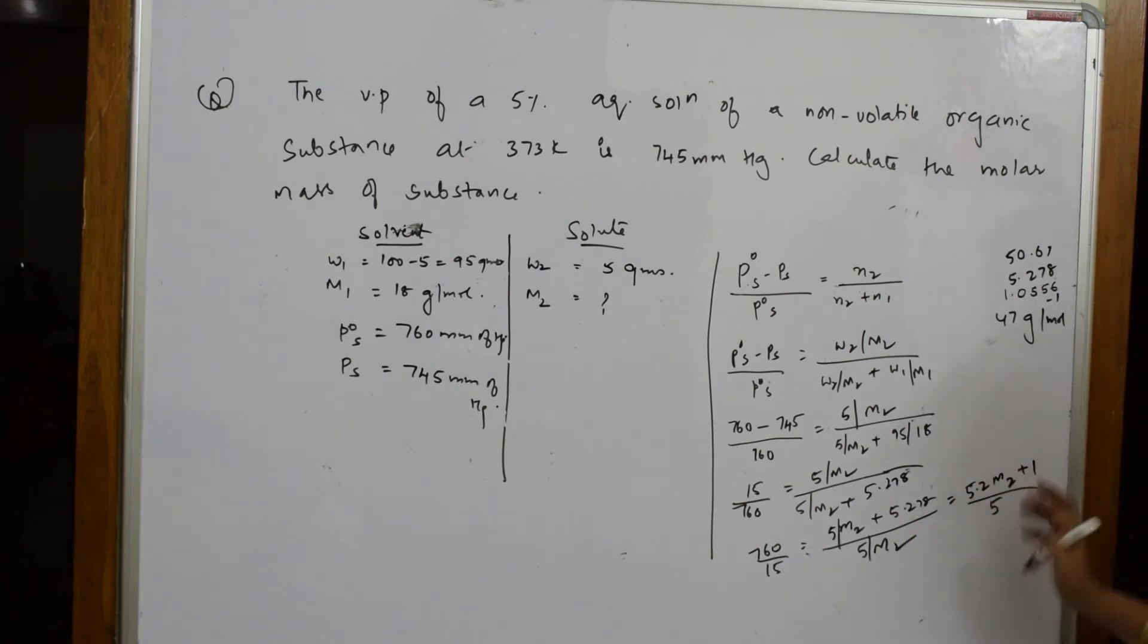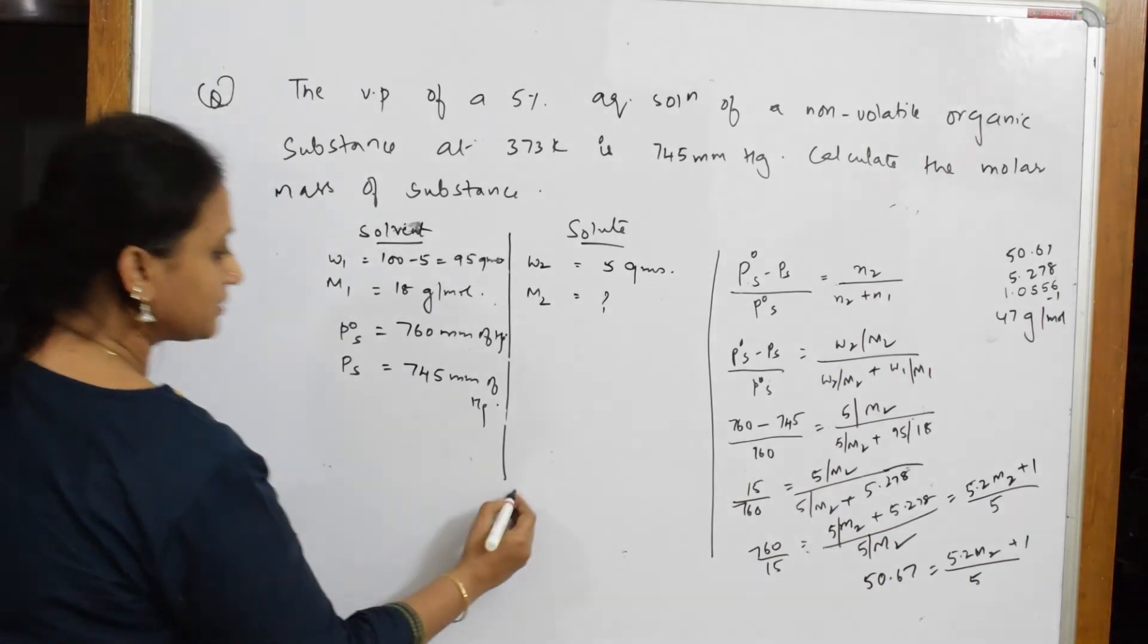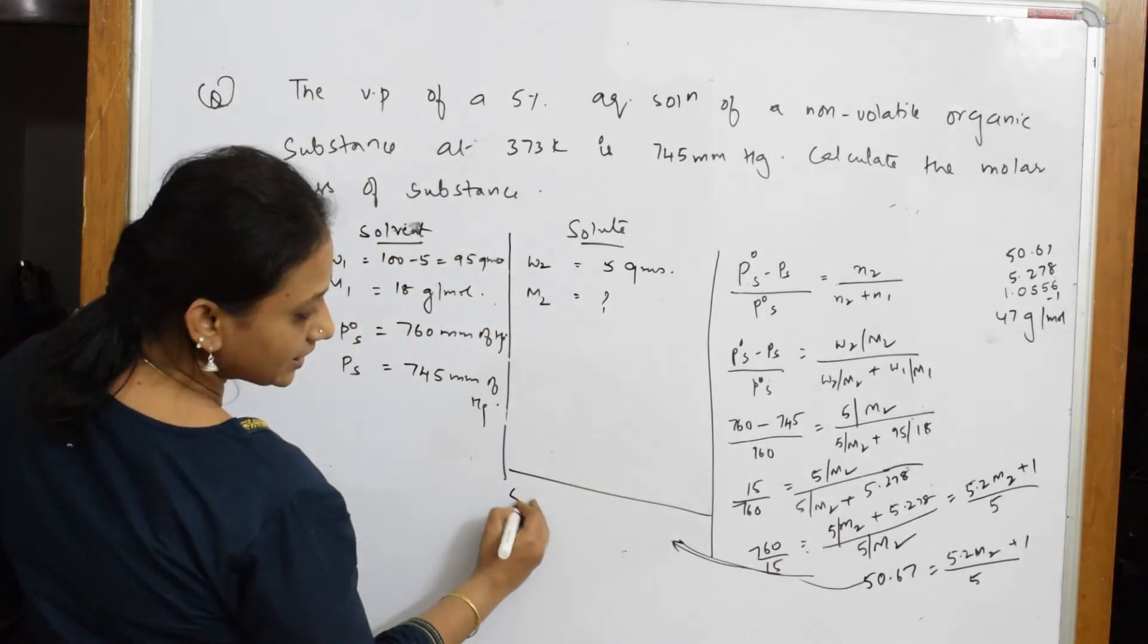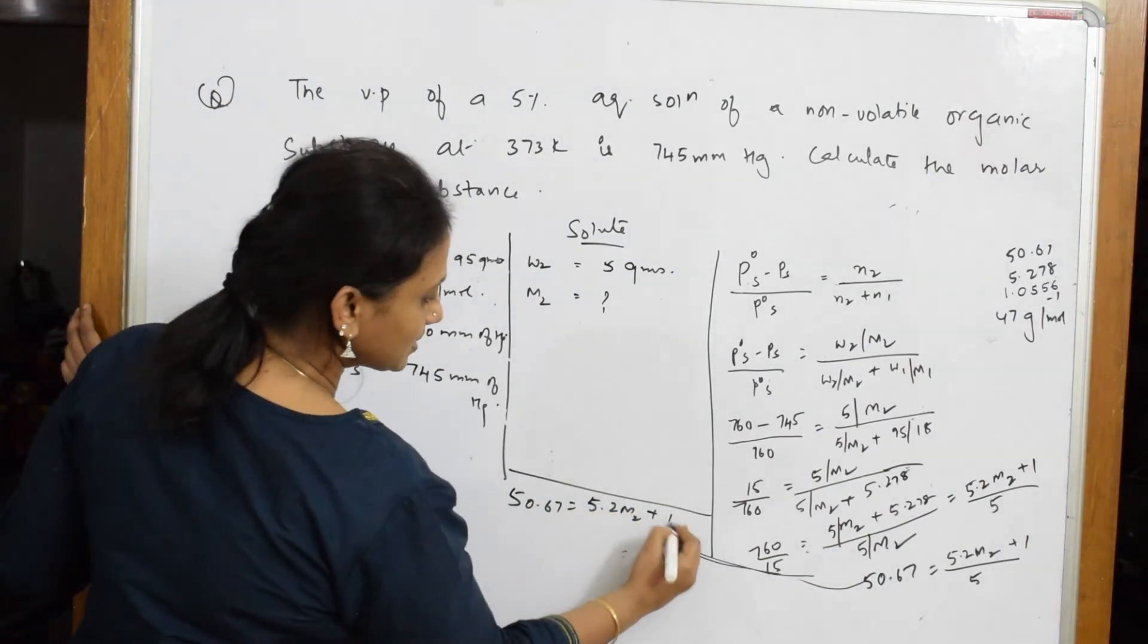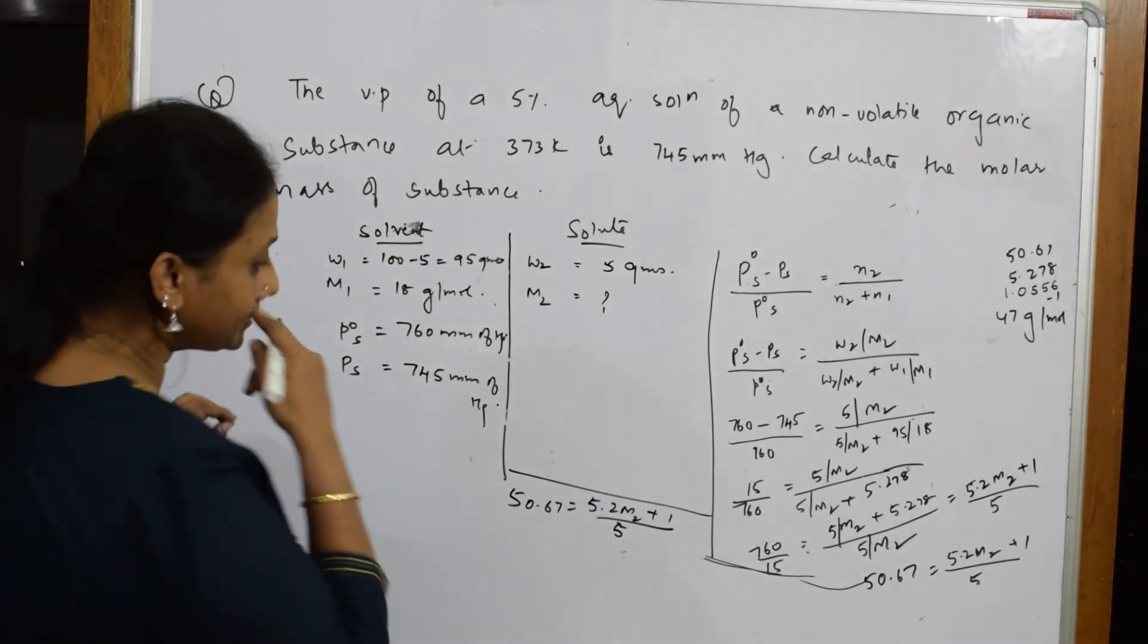We forgot this, isn't it? Okay, let me take this one here. I'm trying to take, so this is a bit low. So let's write this here. What did I get? I got 50.67 is equal to 5.2 m2 plus 1 by 5. I have to find m2. Simple, isn't it? Now when I further solve this, I get an answer of 1.0556 m2, okay, plus 1.